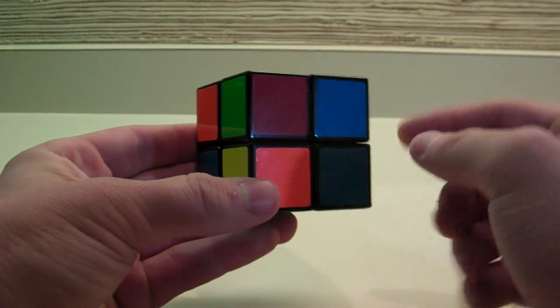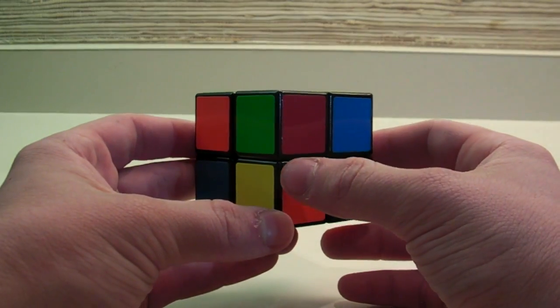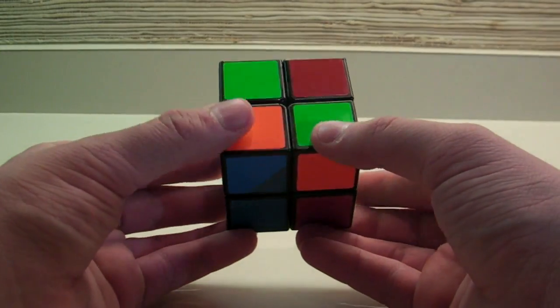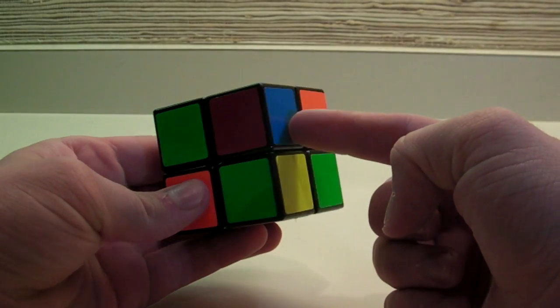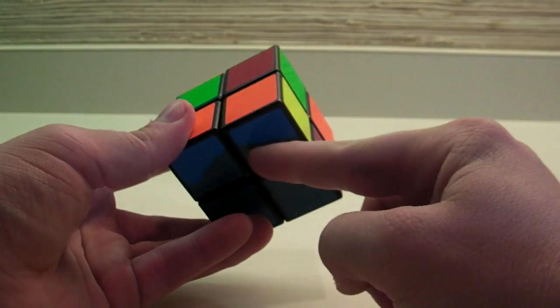For this solve, I'm going to use blue. It is very easy to be color neutral with this method. So, I'm going to put the two matching blues on the bottom left, and I'm going to start inserting my corners. Blue, and then blue. Right there.